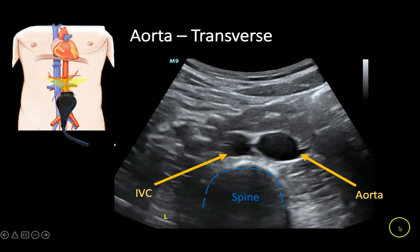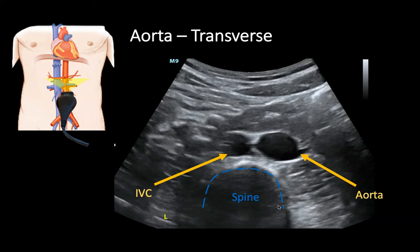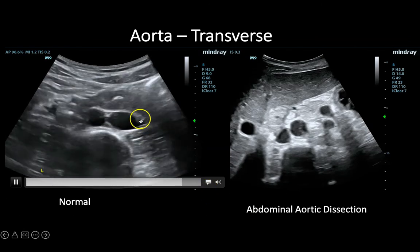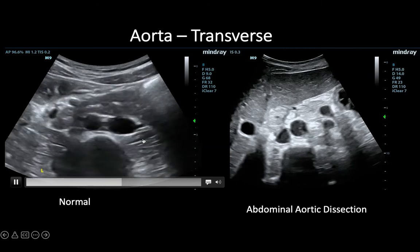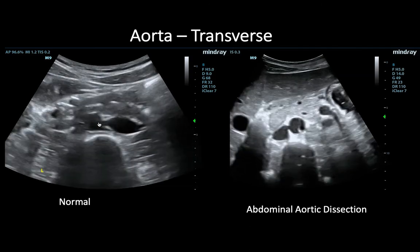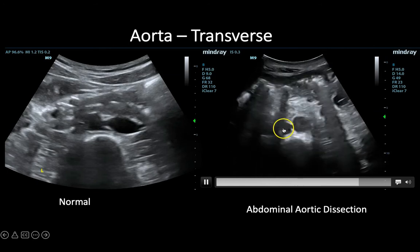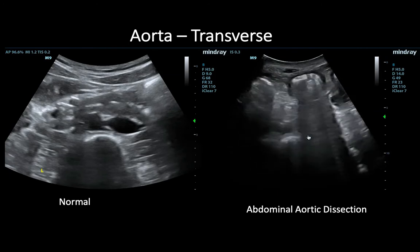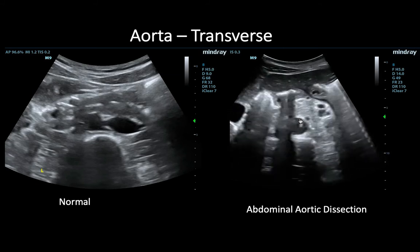Next, we'll talk about scanning the aorta. We can see the aorta and IVC adjacent to the spine, which is a helpful landmark. When completing an aorta scan, scan through its entire length from just below the xiphoid process through the iliac bifurcation. In a normal transverse view, the lumen of the aorta is completely anechoic. In a pathologic scan, there is a hyperechoic linear structure within the lumen consistent with a dissection flap in an abdominal aortic dissection.